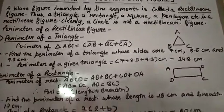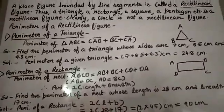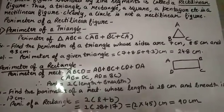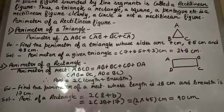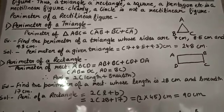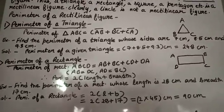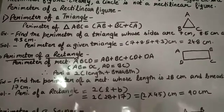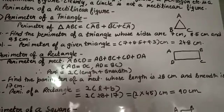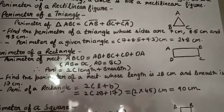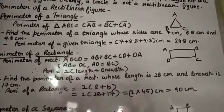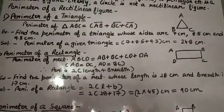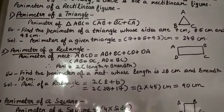Now perimeter of a rectilinear figure. I will explain you about different perimeters of rectilinear figures one by one. So perimeter of a triangle — perimeter of triangle ABC is equal to AB plus BC plus CA, as you can see in the figure on the right hand side.